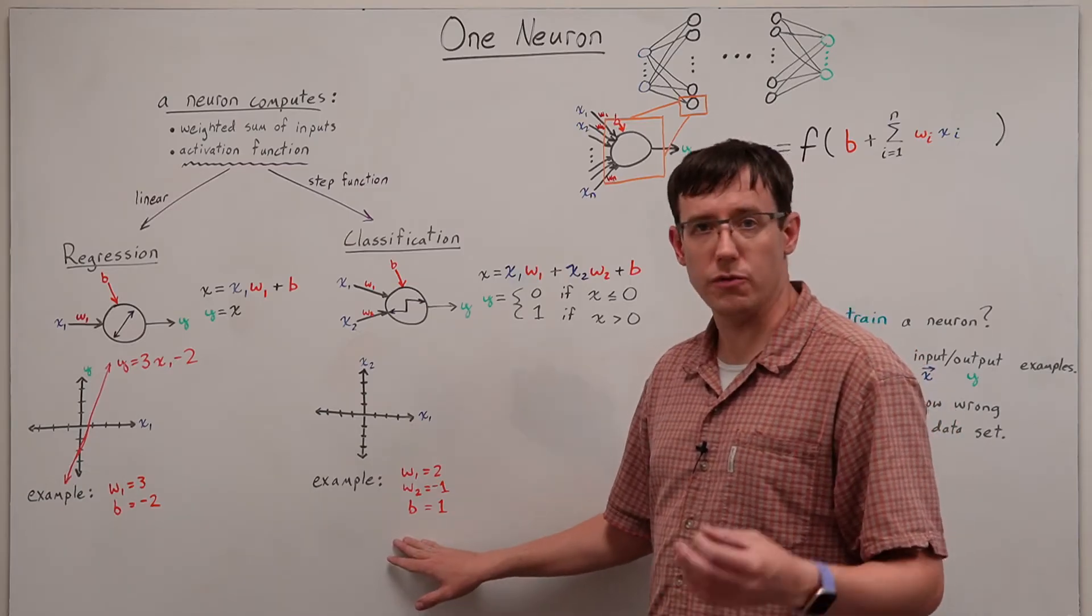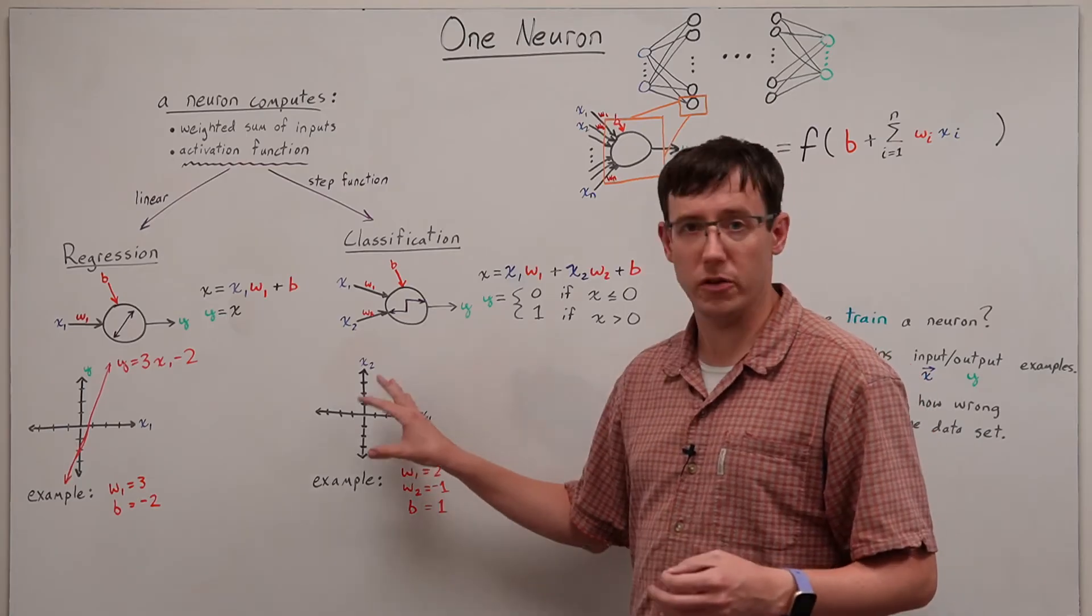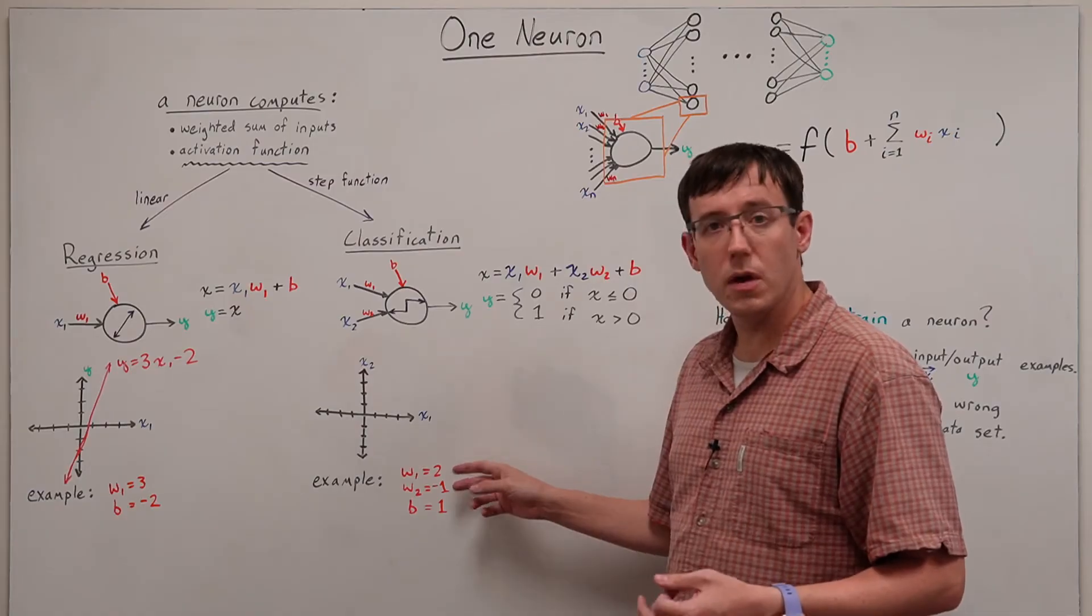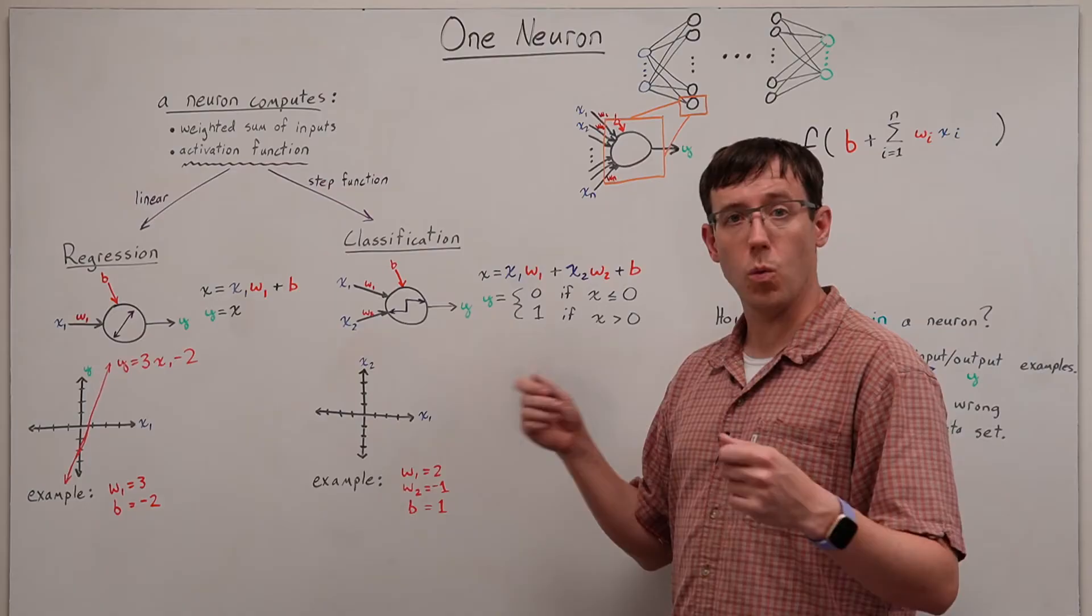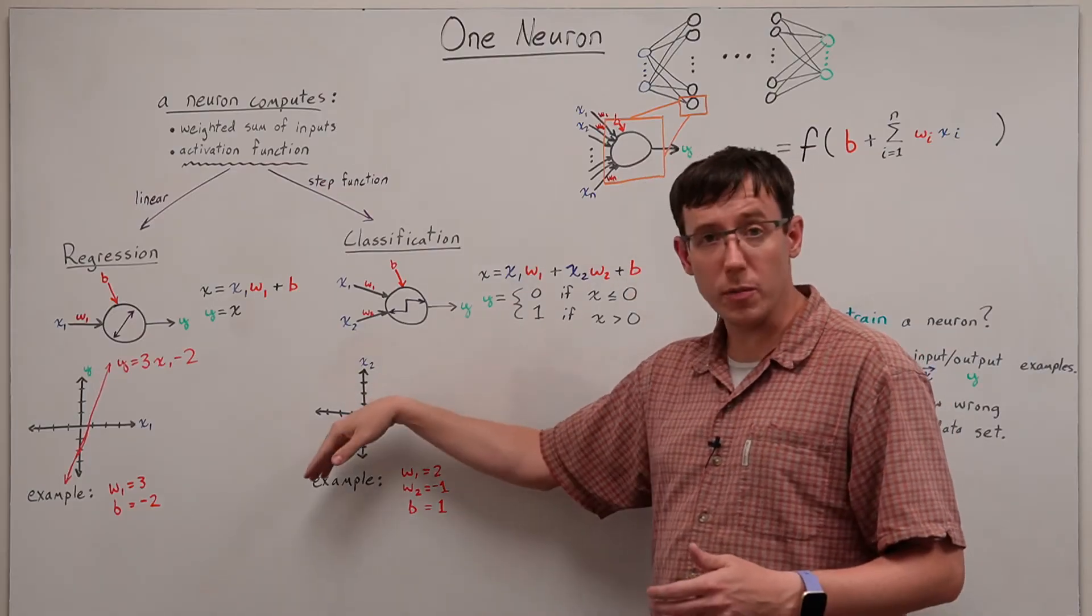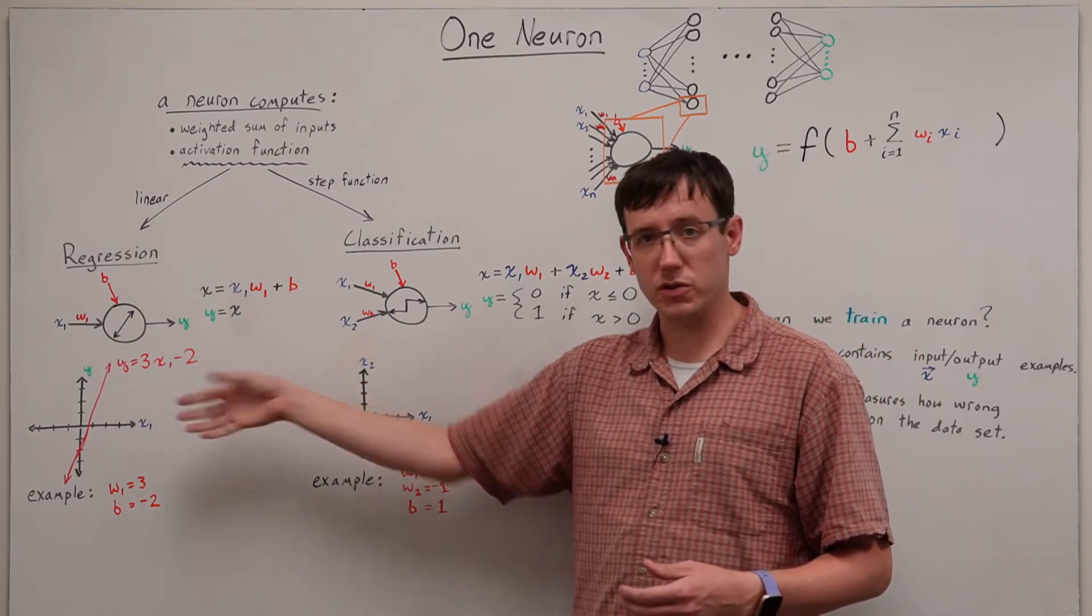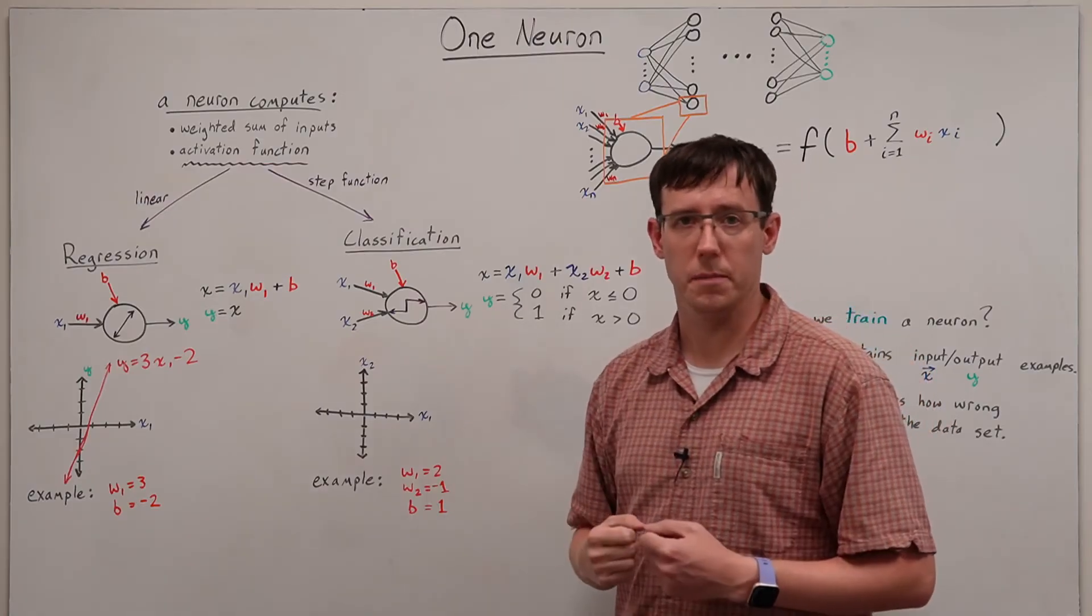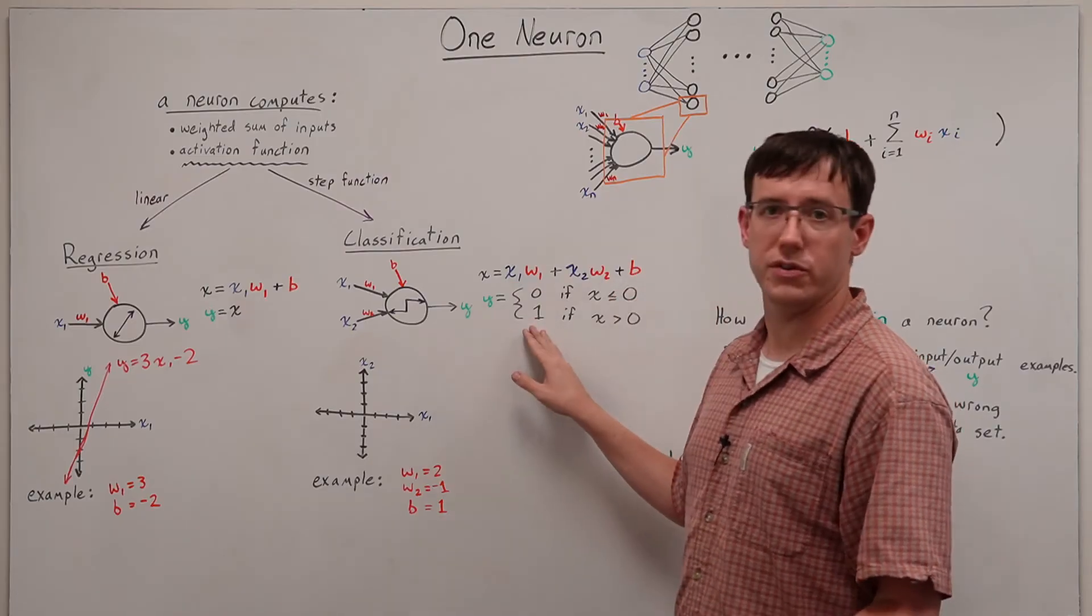So our activation steps from 0 to 1 when the weighted sum of inputs becomes positive. Once again, if we pick example values for the weights and the bias, we could plot this on a two-dimensional graph. Because here we have two-dimensional inputs, but our output is now just 0 or 1. So I will draw the boundary in the two-dimensional plane between the inputs where the neuron outputs 0 and the inputs for which the neuron outputs 1. That boundary happens where the weighted sum of inputs is equal to 0.